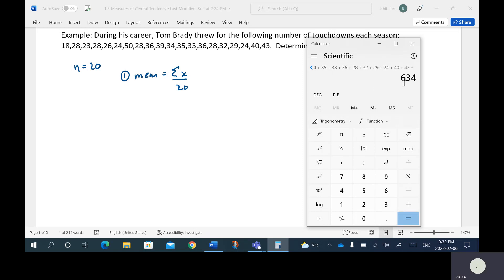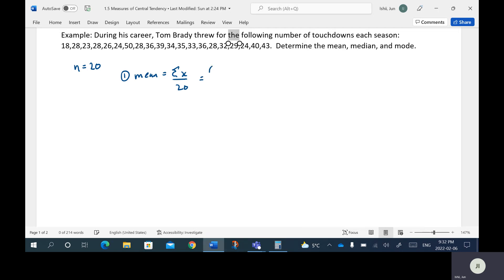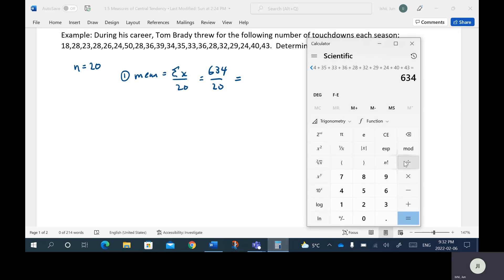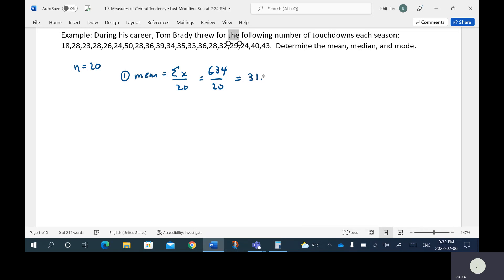So as a result, the sum of his touchdowns is 634. So actually in total in his career, he threw for 634 touchdowns. I'm going to divide that by 20. So cool. Mean there is equal to 31.7. So on average, he threw for 31.7 touchdowns per season.